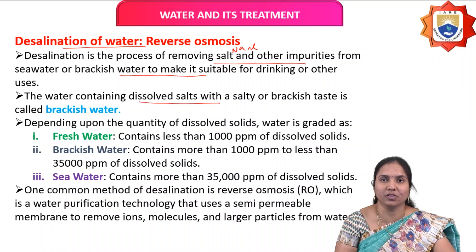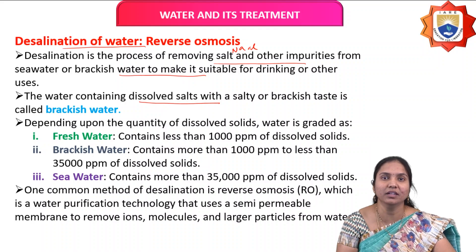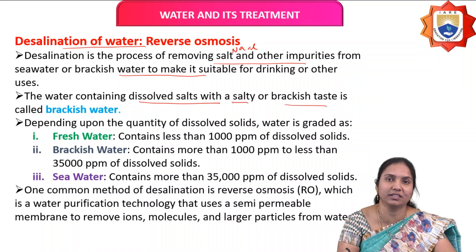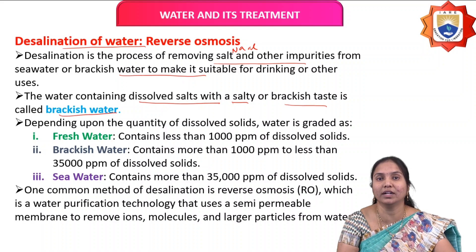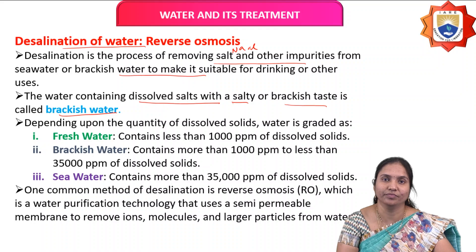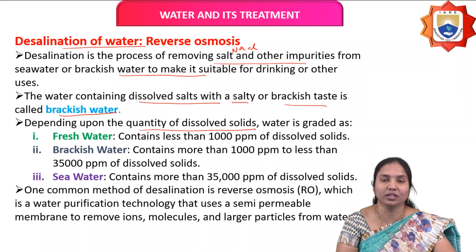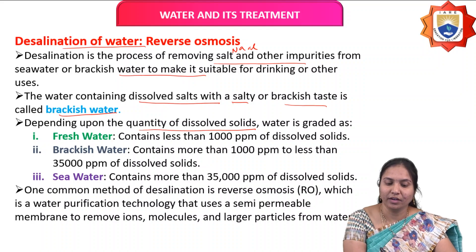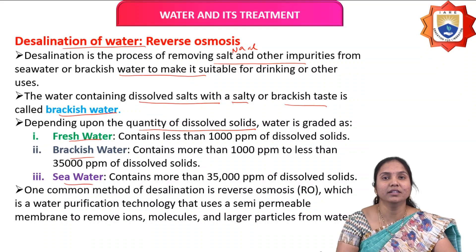Water containing dissolved salts — such as hardness-causing ions, minerals, or different impurities — with a salty or brackish taste is called brackish water. Based on the quantity of dissolved solids present, water is classified into three types: fresh water, brackish water, and sea water.